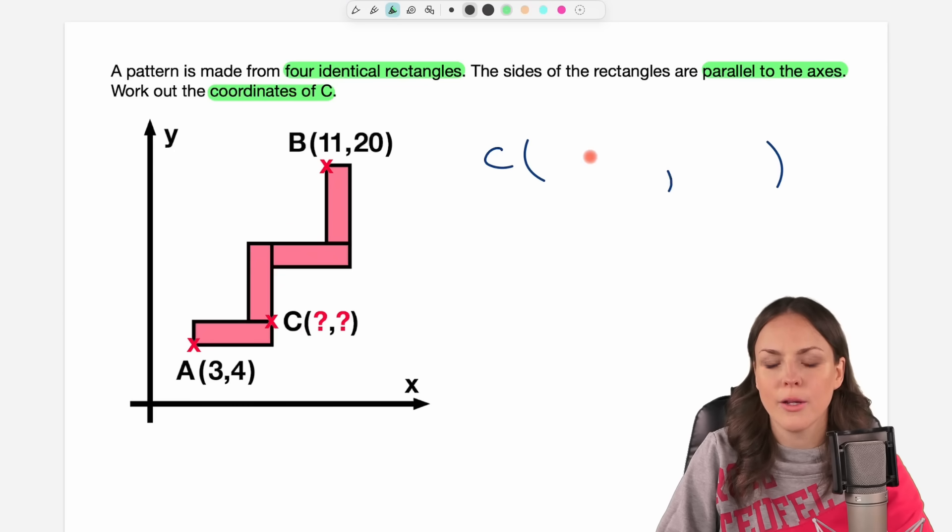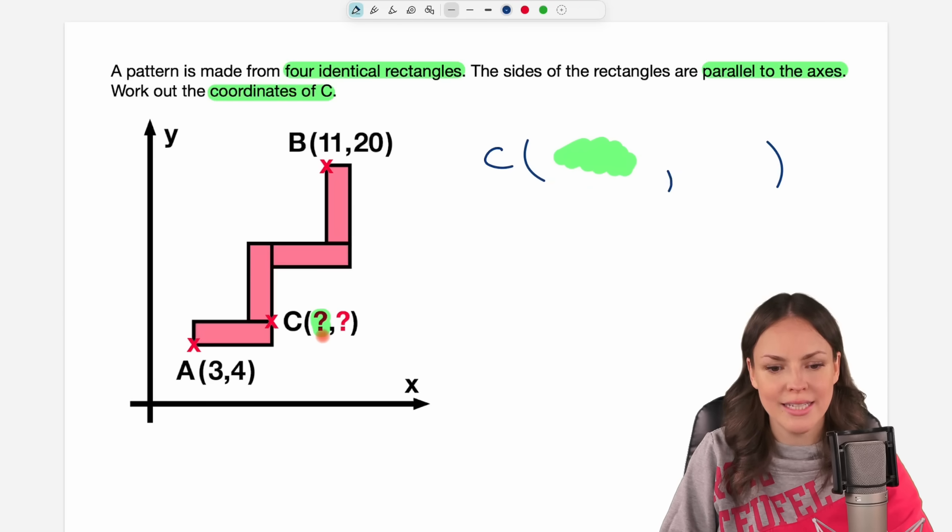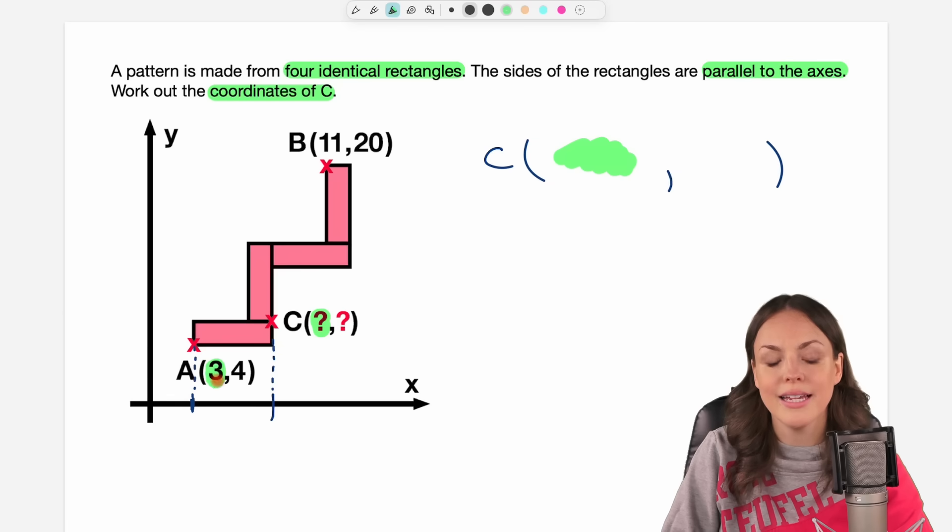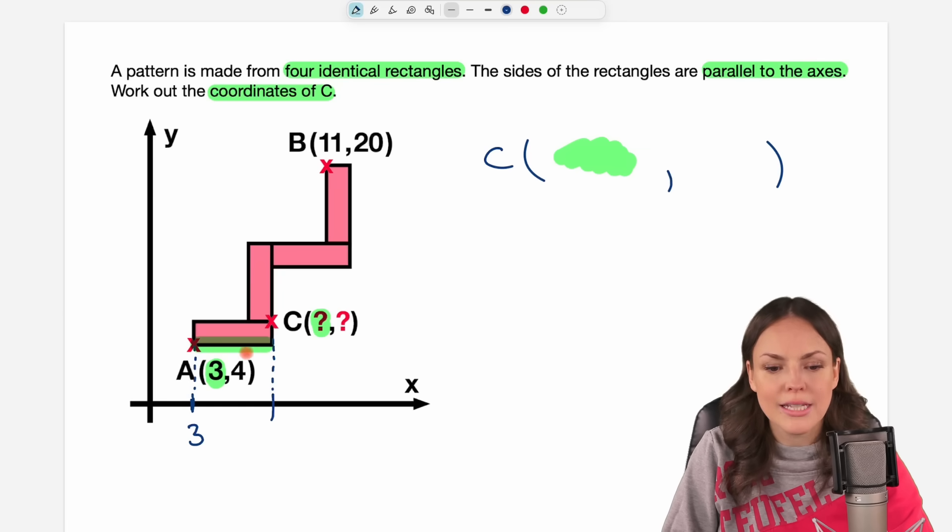I want to find the coordinates of point C. So let's start with the x-coordinate. Here, this coordinate, I would like to know this. So here from my point, I can go down. I need to know where I am here on the x-axis to find this x-coordinate. We could start at point A because here at this point, we know that the x-coordinate is 3. And how can I get from here to here? I can just walk along this path here and this is the length of the side of the rectangle.